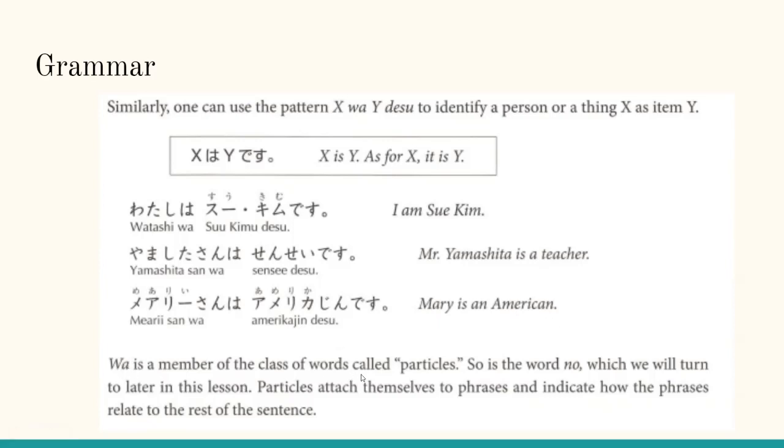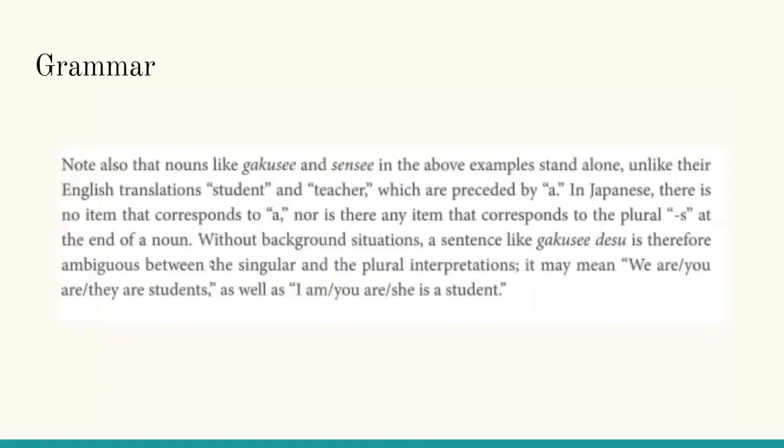Wa is a member of the class of words called particles, so is the word no, which we will turn to later in this lesson. Particles attach themselves to phrases and indicate how the phrases relate to the rest of the sentence. Note also that nouns like gakusei and sensei in the above examples stand alone. Unlike their English translations, student and teacher, which are preceded by a. In Japanese, there is no item that corresponds to a, nor is there any item that corresponds to the plural S at the end of a noun.